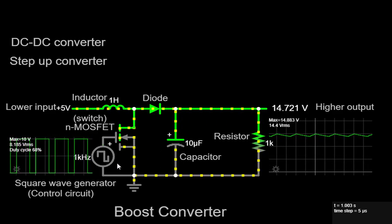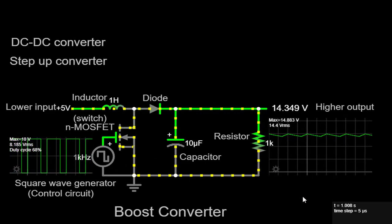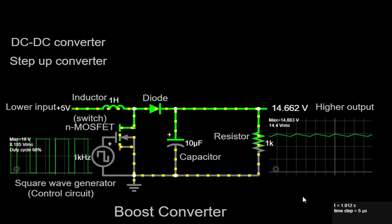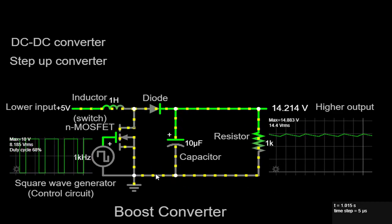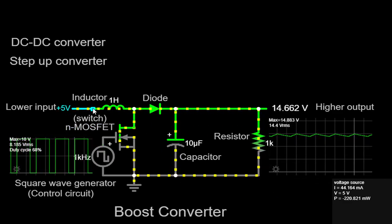Now, let's take a closer look at the circuit we have set up here to understand the boost converter's operation in detail. We begin with a plus 5V input connected in series with a 1H inductor.